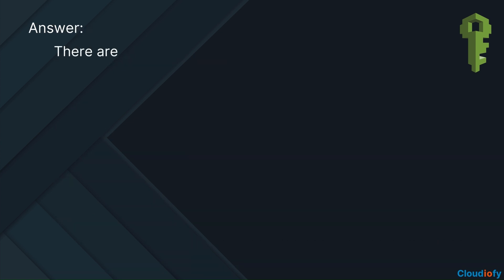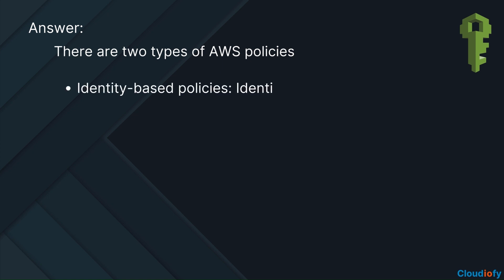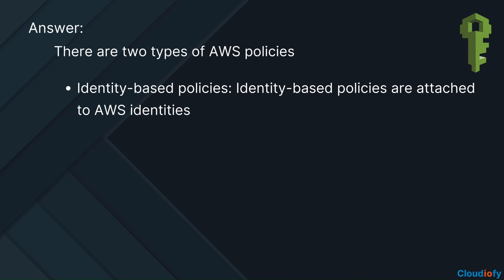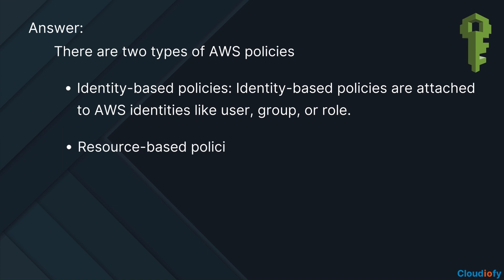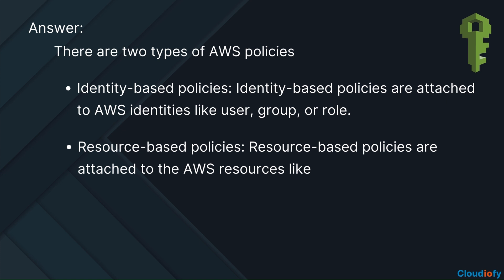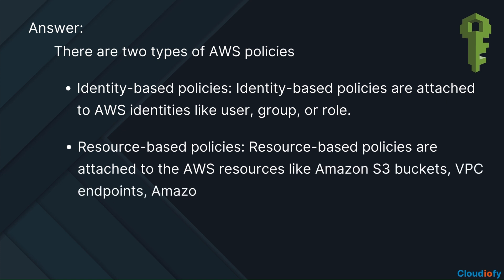There are two types of AWS policies: identity-based policies, which are attached to AWS identities like a user, group, or role; and resource-based policies, which are attached to AWS resources like Amazon S3 buckets, VPC endpoints, Amazon SQS queues, AWS KMS, and other services.